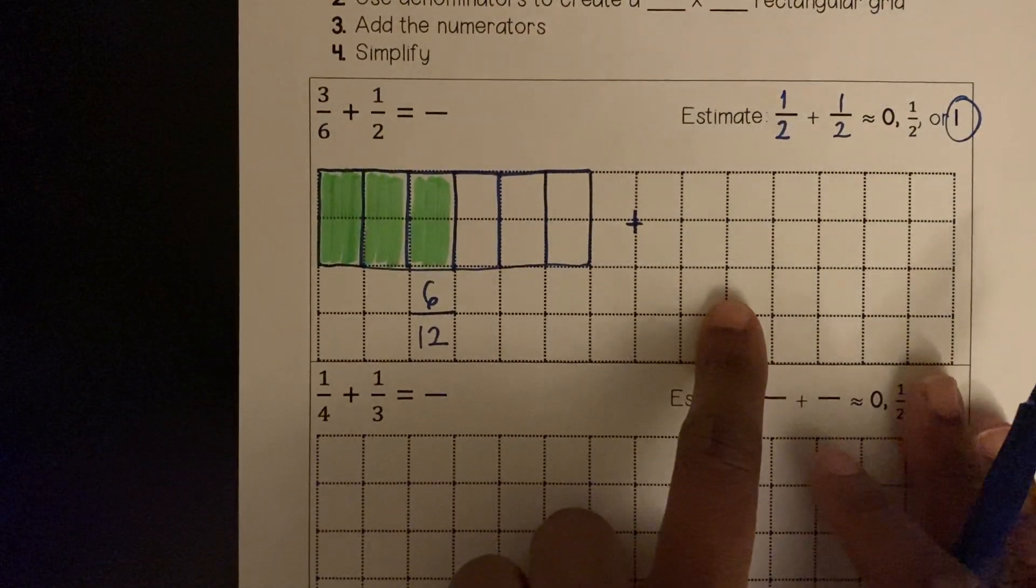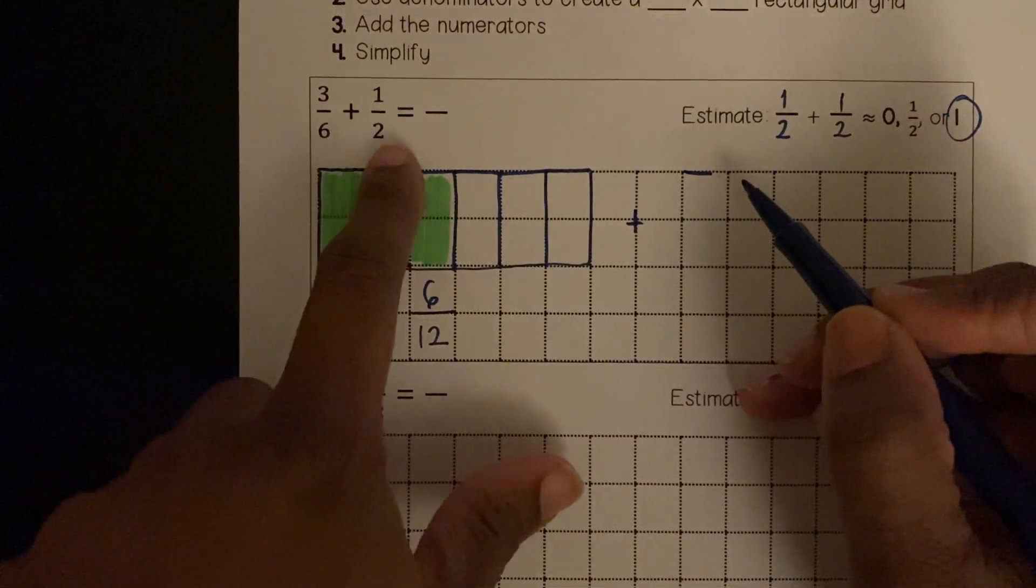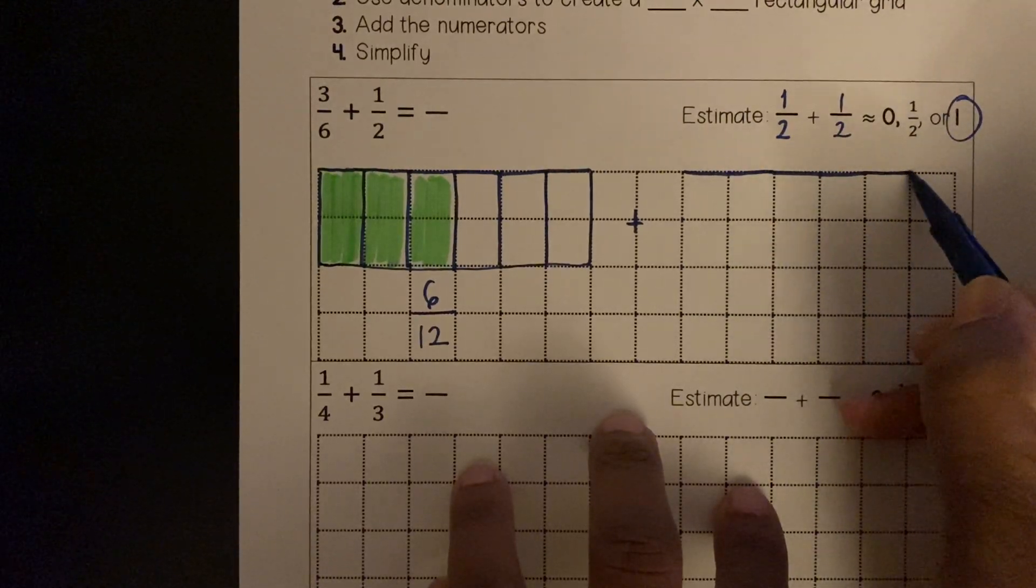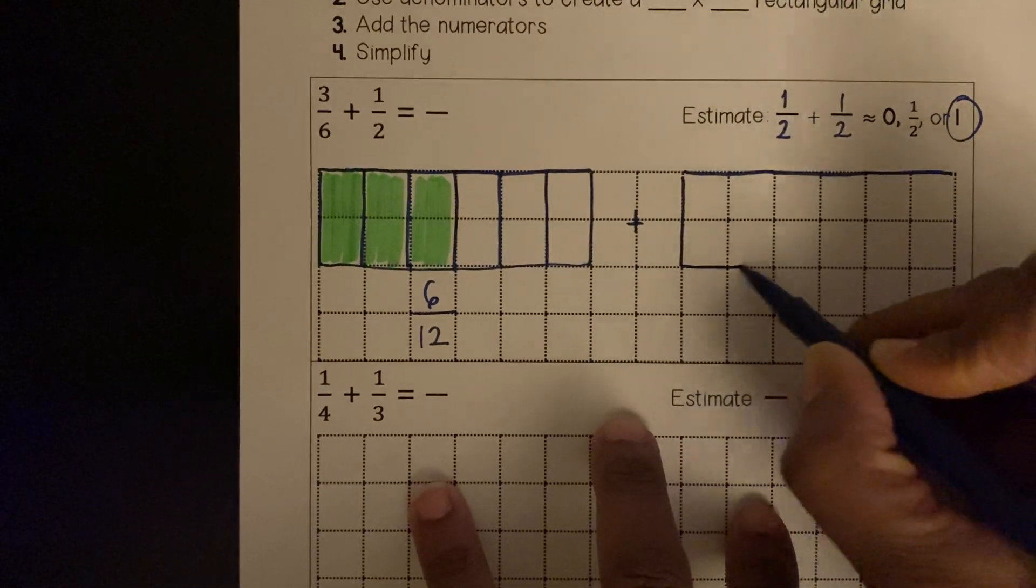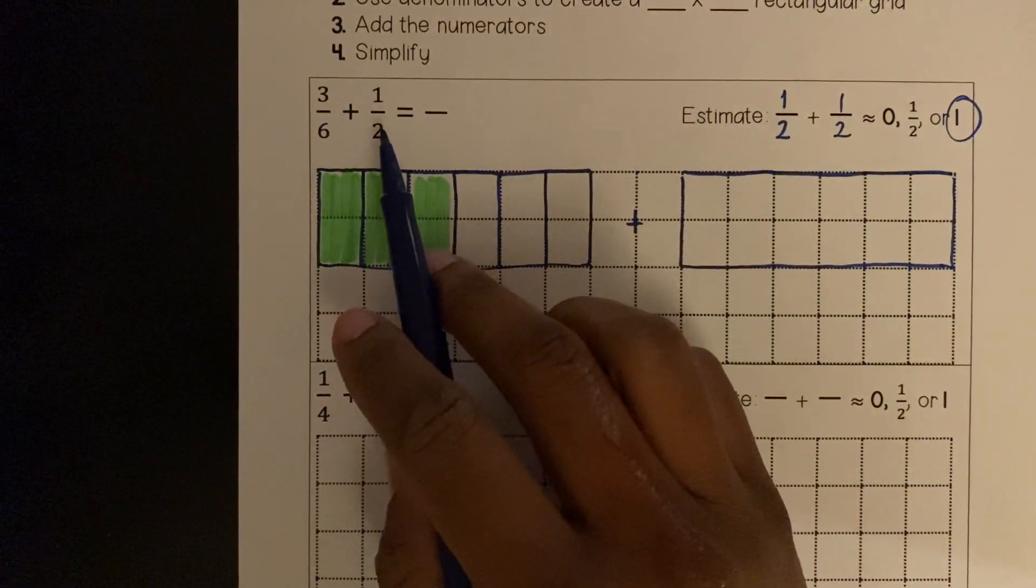Plus, now I need to model my 1/2. I'll use a 6 by 2 grid. One, two, three, four, five, six. Down two: one, two.